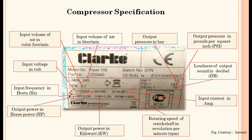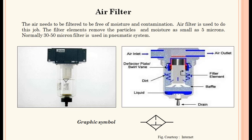Compressor specifications are shown in this slide. The next component is the air filter — air needs to be filtered to be free from moisture and contamination. The air filter removes particles and moisture as small as 5 microns; a normal 30 to 50 micron filter is used in a pneumatic system. The picture, cut section, and symbol are all shown.